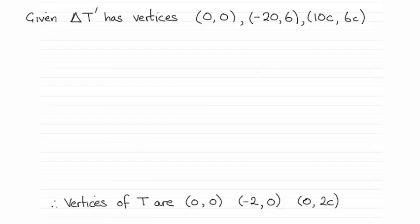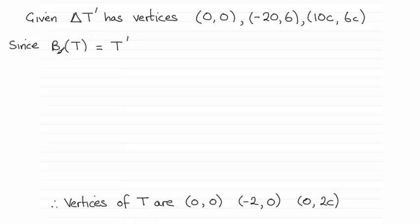The answer turns out to be that the vertices of T are (0,0), (-2,0), and (0,2C). To do this, we set up the equation: B times the vertices of T gives the new triangle T prime. To get T, we need to remove the matrix B by pre-multiplying both sides by the inverse of B, giving T equals the inverse of B times T prime. Remember, the inverse of B times B gives the identity matrix, which leaves us with T.